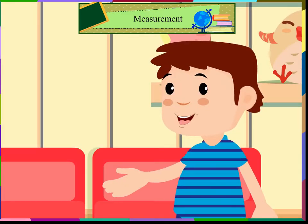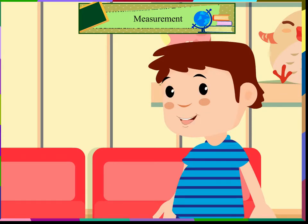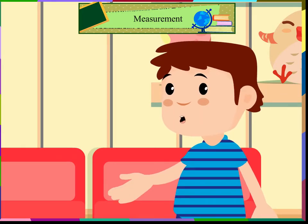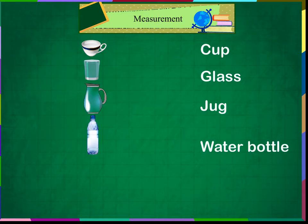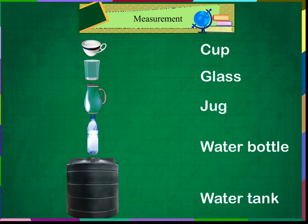Ramya, can you arrange them in increasing order of capacity? Cup, glass, jug, water bottle, water tank. Very good.